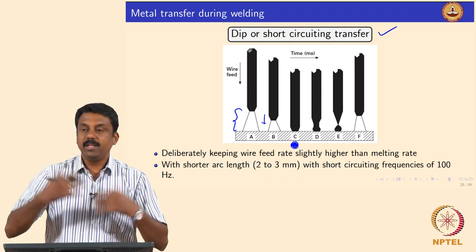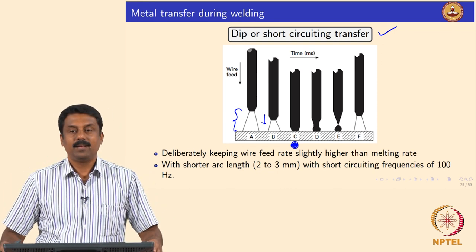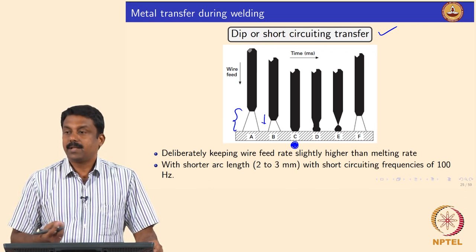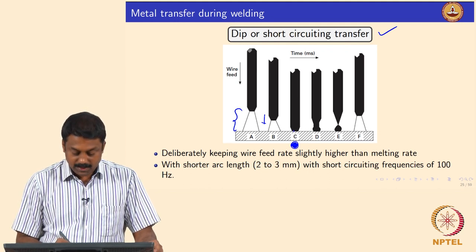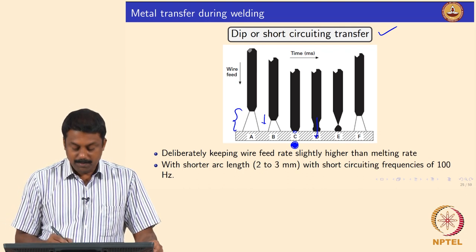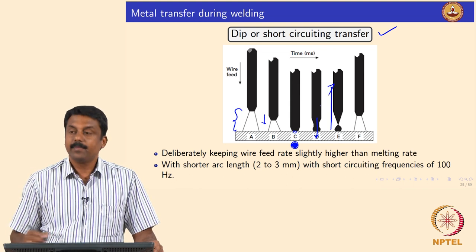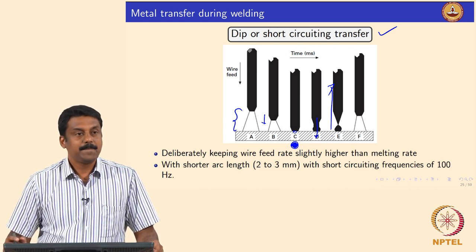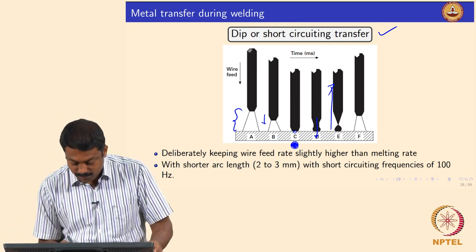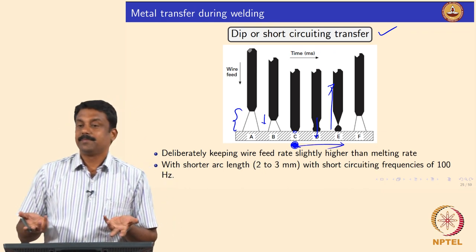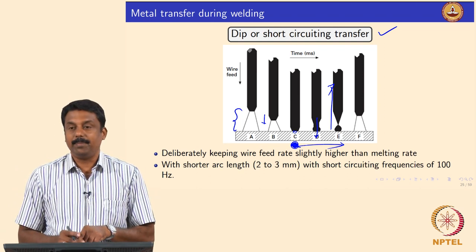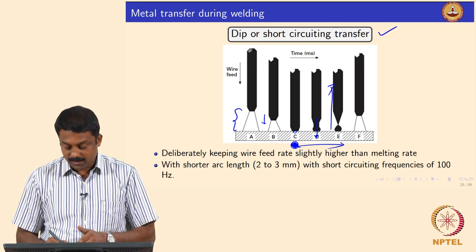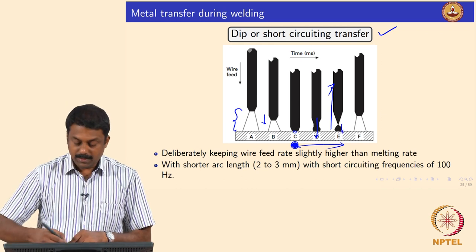Once the short circuiting happens, you also increase the current. Once short circuiting happens, you can transfer the droplet to the workpiece. You form a droplet, and once you are dipping it, you melt the droplet and then subsequently pull the wire back. Whatever is molten is detached by the surface tension of the weld pool. During these three steps, the arc is not present. When the short circuiting happens, the arc is gone, and the filler can melt before or during short circuiting, and the droplet is transferred by retracting the wire back.